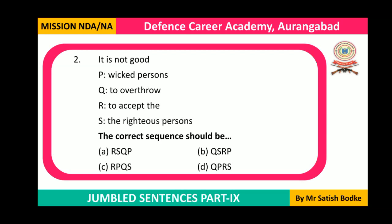Question number two: It's not good to overthrow the righteous or virtuous persons, and not good to accept the wicked persons. The correct sequence is QSRP, which is option B. Our answer is option B.